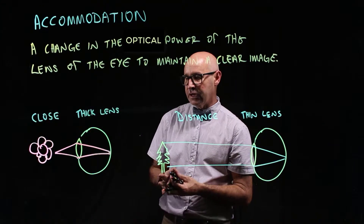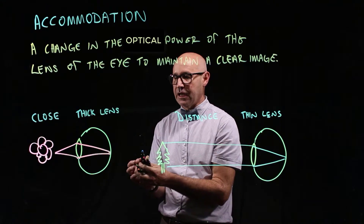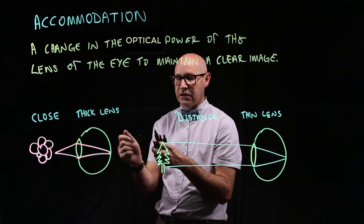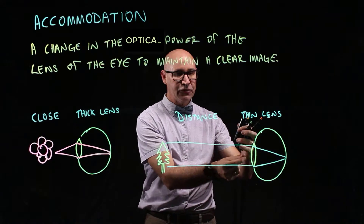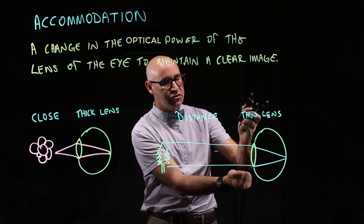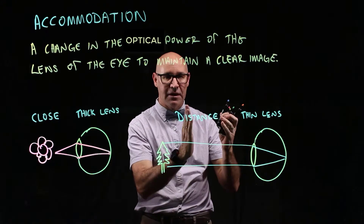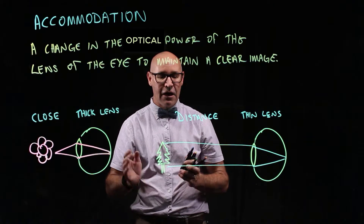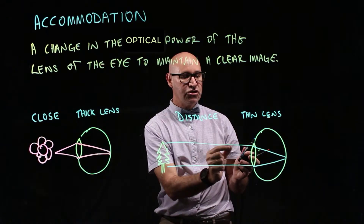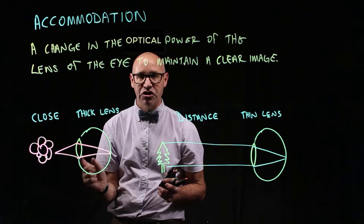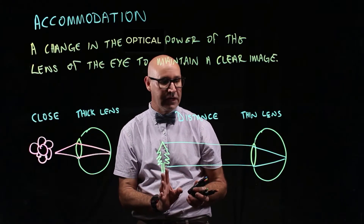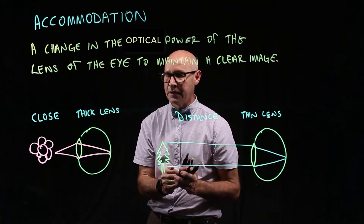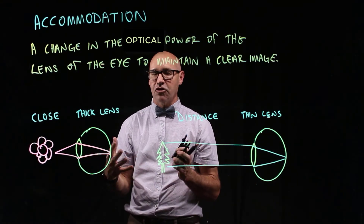Interestingly, the resting position for the lens is quite thick. It's very flexible, so we actually need to use muscles to pull the ends of the lens, making it thinner. That is the process of accommodation — our eye changes the thickness of the lens and adjusts its optical power so that we can see things in focus whether they are far away or up close. That's accommodation.